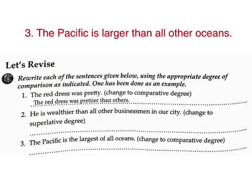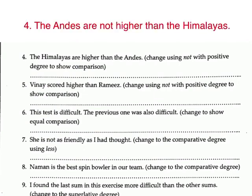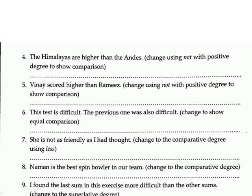3. 'The Pacific is the largest of all oceans' — change to comparative degree. Answer: The Pacific is larger than all other oceans. 4. 'The Himalayas are higher than the Andes' — change using 'not' with positive degree to show comparison. Answer: The Andes are not as high as the Himalayas.